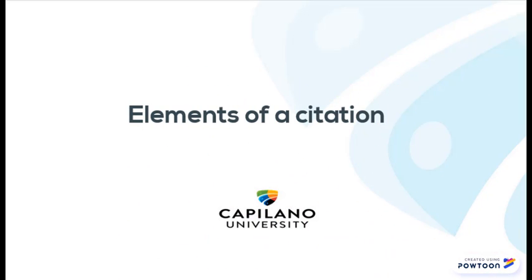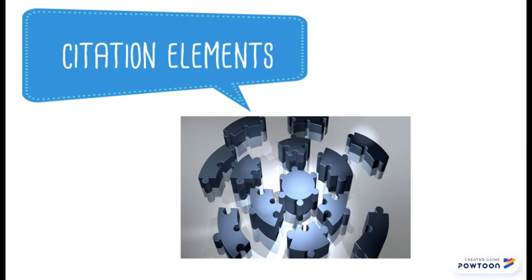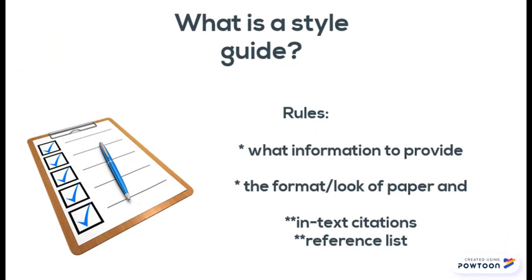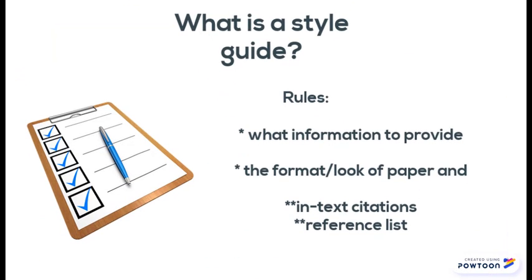In the plagiarism tutorial we looked at when and why to cite. Now let's look at the elements of a citation and how they change — or don't change — from one citation style to another. If you aren't sure what a style guide is, here's a simple definition: a style guide is a set of rules for the layout of your paper. In particular, they specify how to write out your references, also known as citations, so you'll know what information to include and how to format it depending on the resource used.